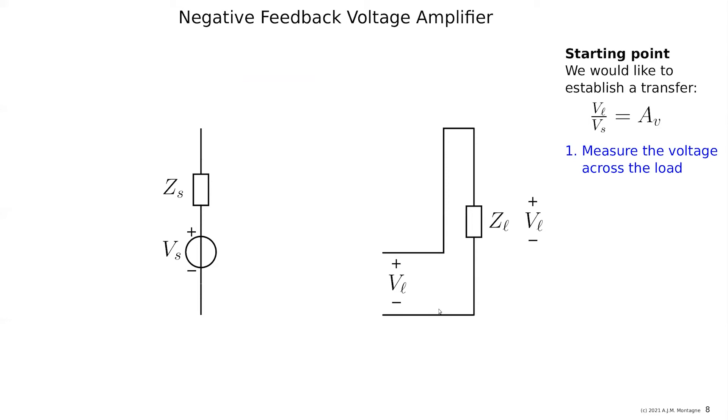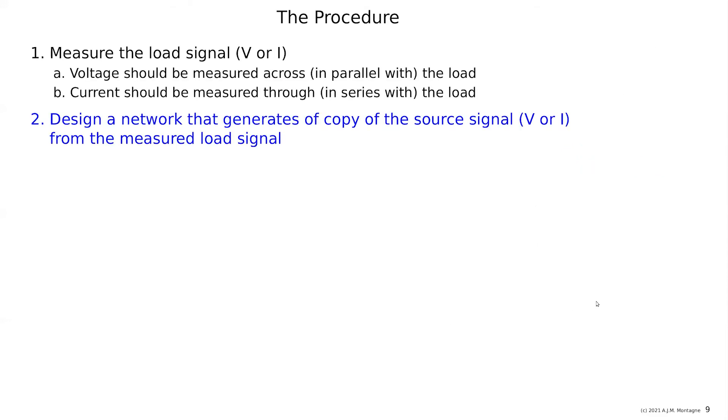So let's do it - measure the voltage, so I need to measure the voltage in parallel with the load. That is the first thing to do, and I want to have VL. Then we are going to design a network that generates a copy of the source signal V or I from this measured load signal. So it means the transfer of this network is the reciprocal transfer of the desired source to load transfer because we are now going from load to a copy of the source.